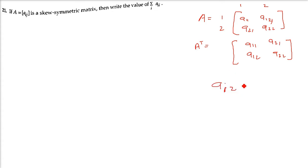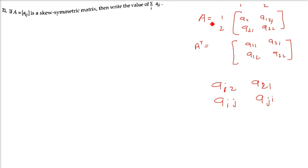When we transpose, wherever Aij was, Aji comes in its place. Since A is skew-symmetric, A transpose equals negative A, so Aij is replaced by Aji but with a negative sign, meaning Aij = -Aji.